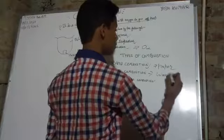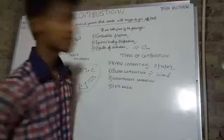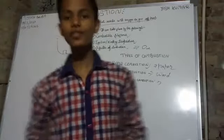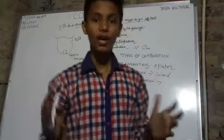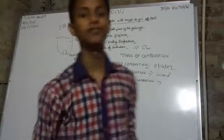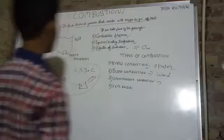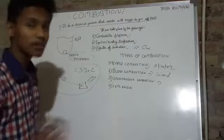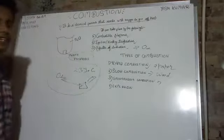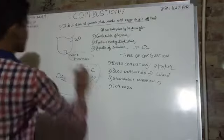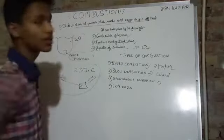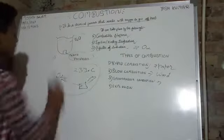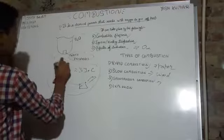The third type is spontaneous combustion — combustion which takes place by itself. An example is white phosphorus, which burns on its own. To prevent it from burning, it is kept in water. If you take it out of the water, white phosphorus starts burning — you can see a video of this on YouTube.